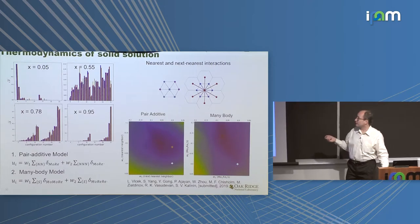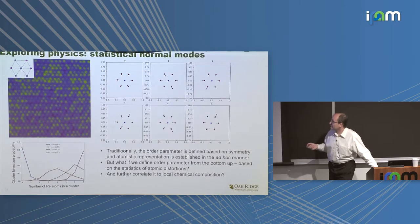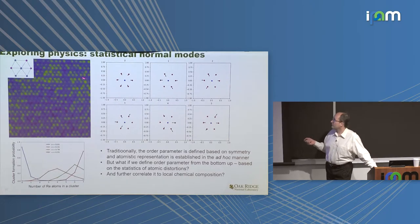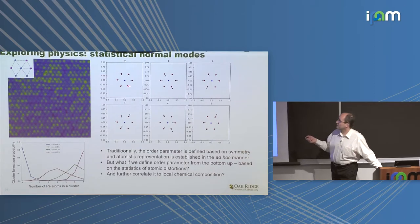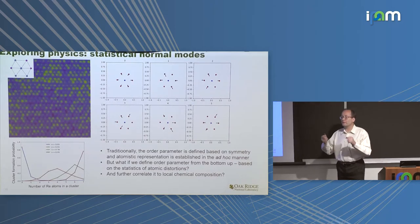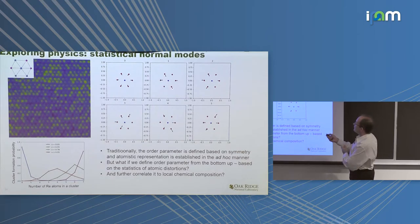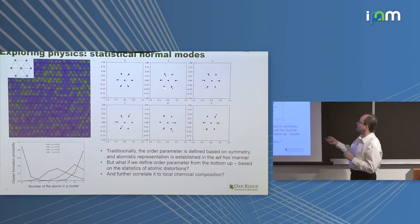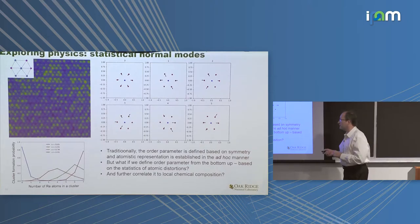Then the question becomes what can I learn from this data? Obviously the solid solution has the Ising universality class. So I can take all the configurations from my experimental observations and say I can consider the pair additive model with nearest neighbors and next neighbors or the many body model. And I can learn the interaction parameters between the rhenium atoms just from the statistics of the observations. Then I can use principal component analysis to reconstruct the statistics of these distortions. And what's interesting is that the first statistical normal mode is just expansion and contraction. But the second one shows a very ordered pattern.